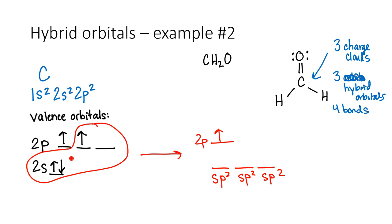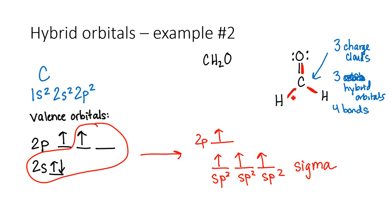These three electrons are now evenly spread out amongst the sp2 orbitals, and these three are going to form the sigma bonds — that would be this one, this one, and this one. These are my three sigma bonds, where my hybrid orbitals are overlapping their electron clouds with the electron cloud from hydrogen or from oxygen.